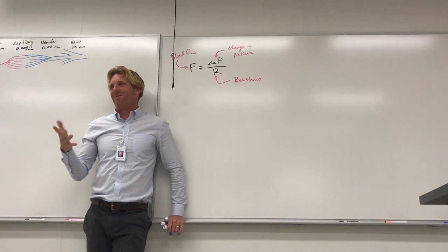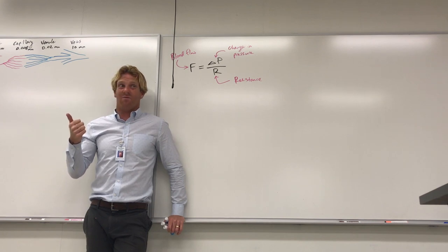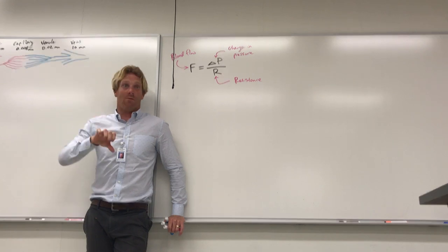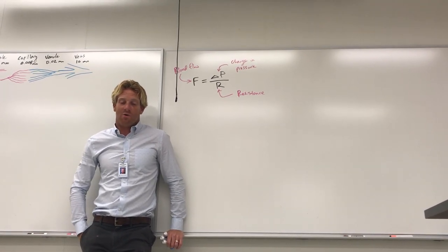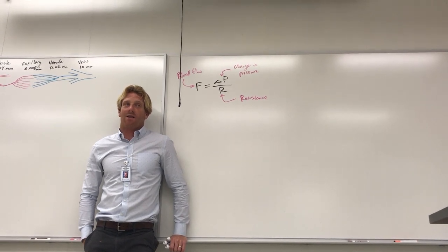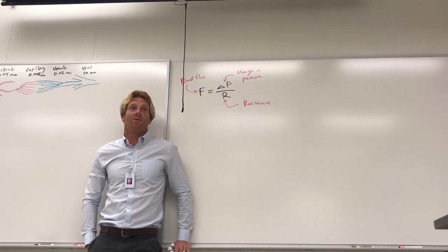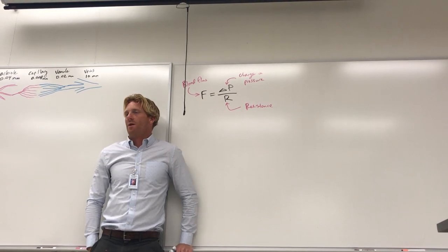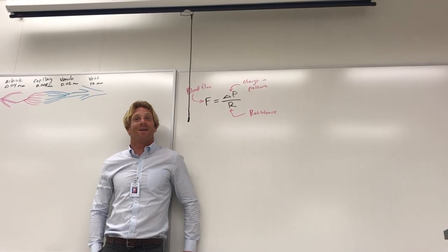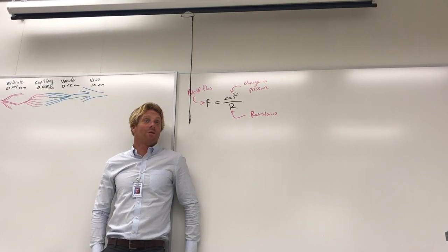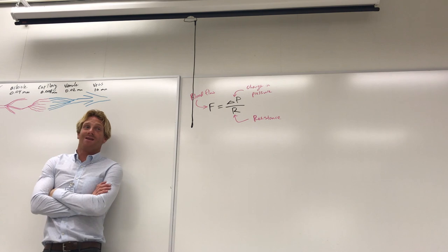Our blood stays about the same viscosity normally, but if we get really dehydrated viscosity goes up a little, resistance increases, and blood flow goes down slightly. Another factor affecting resistance is the length of a tube — longer tubes exert more resistance on a fluid. A normal-length straw is easier to drink through than a super long crazy straw. Shorter tubes mean lower resistance and higher flow.